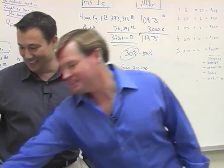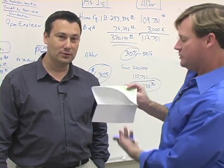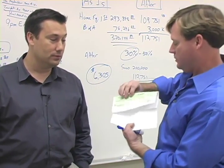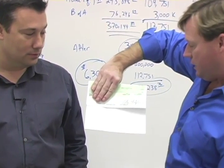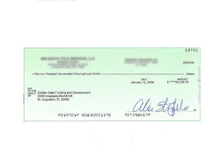Let's show them the check. Here it is, guys. Check it out. Check out this check. Here it is. Right here. Now, there's some personal information here, so we're not going to let you zoom in on that, but by gosh, there is the amount on the check right there. $54,238.76.